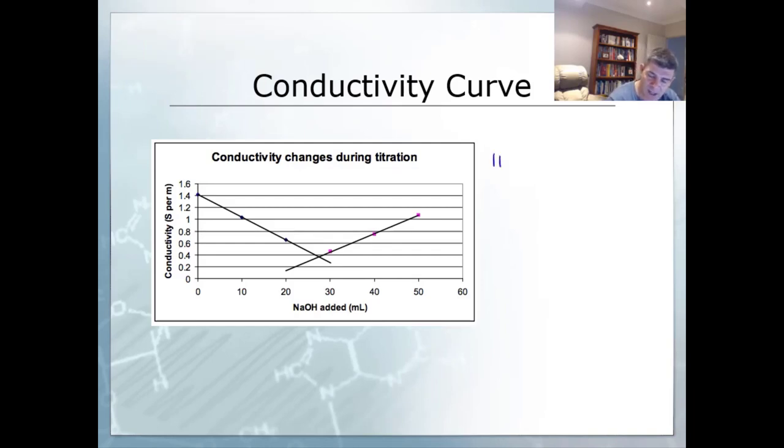If we think about the fact that our strong acid fully dissociates, so let's look at some ions, and our strong base is also dissociating into ions. These are our four ions that are present that we're adding into the solution.